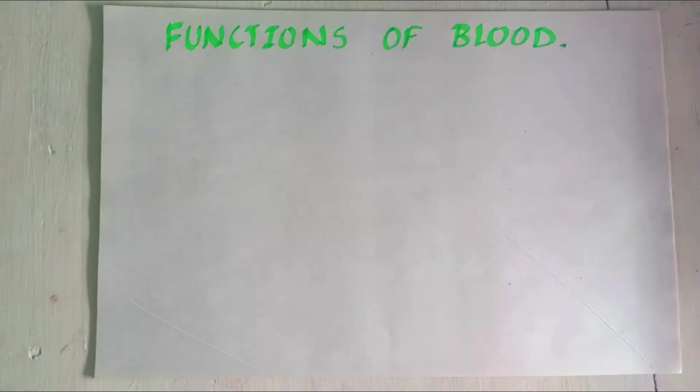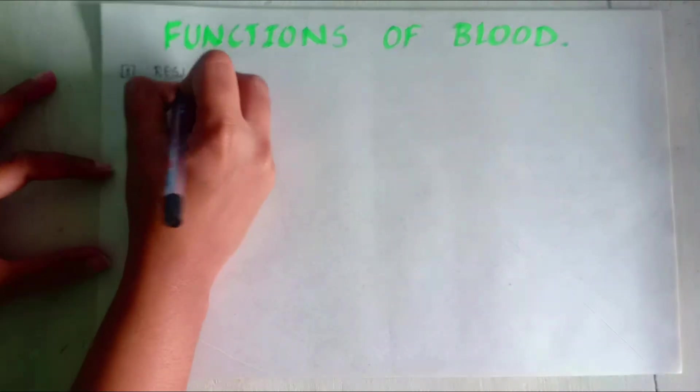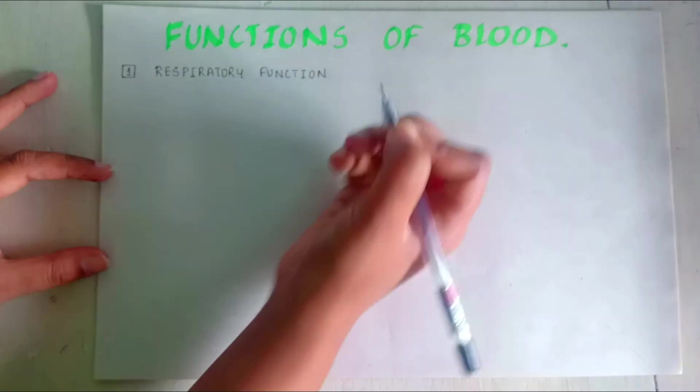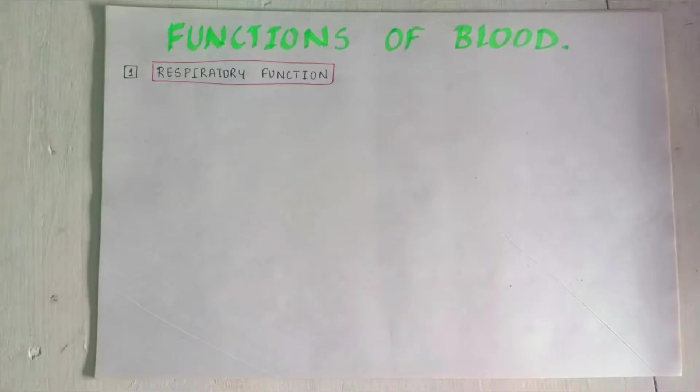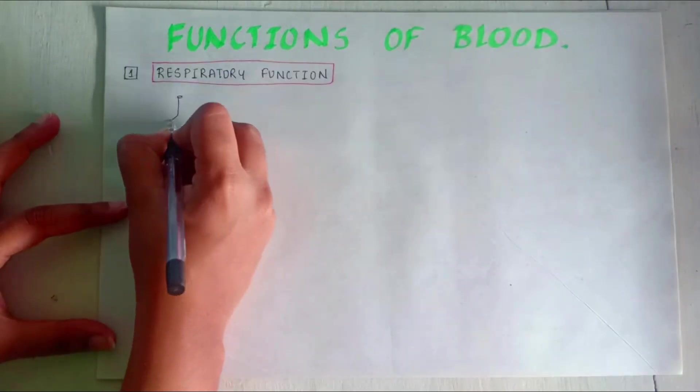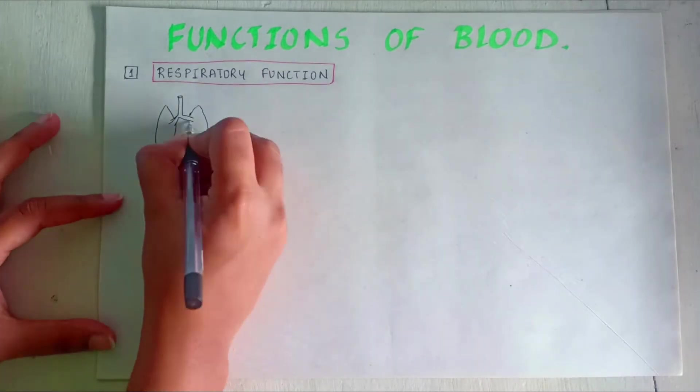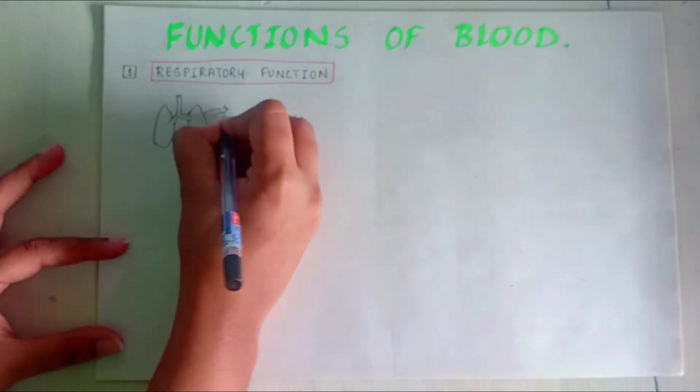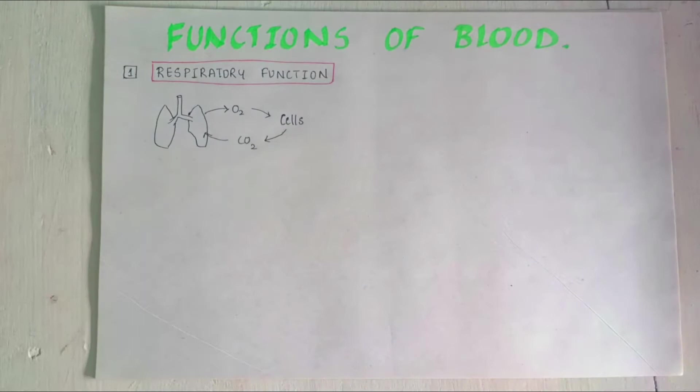Functions of blood. First function: The respiratory function. Transport of respiratory gases is done by the blood. It carries oxygen from the alveoli of the lungs to different tissues and carbon dioxide from tissues to the alveoli.